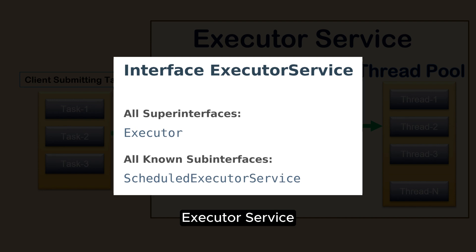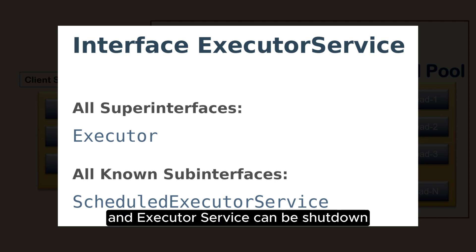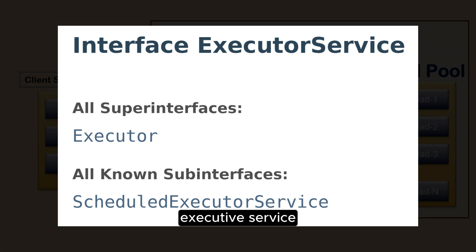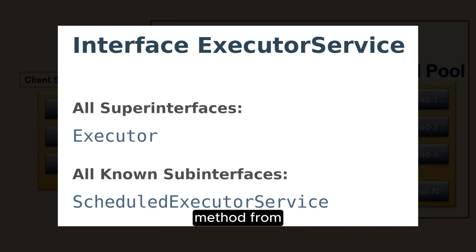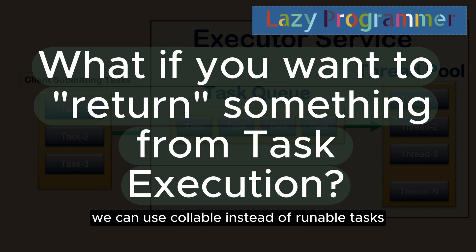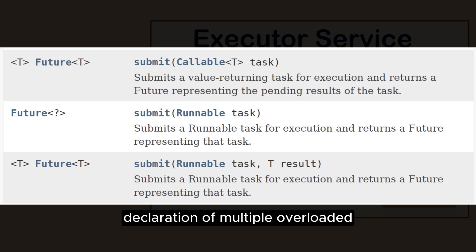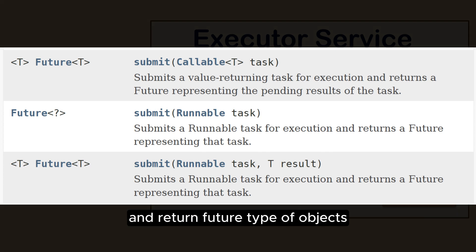Another important interface is ExecutorService, which extends the Executor interface. ExecutorService provides additional method definitions beyond the standard Executor interface. An ExecutorService can be shut down, which will cause it to reject new tasks. An unused ExecutorService should be shut down to allow reclamation of its resources. The execute method from the Executor interface does not return anything, but with tasks where we need to get some result back, we can use Callable instead of Runnable tasks. To manage those return values, ExecutorService provides multiple overloaded submit methods which accept Runnable or Callable tasks and return Future objects.